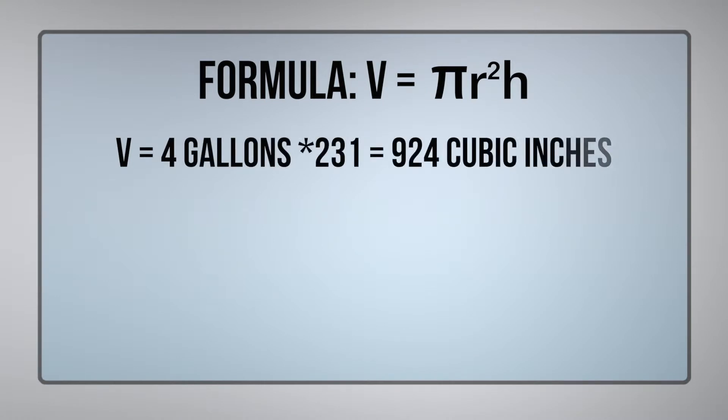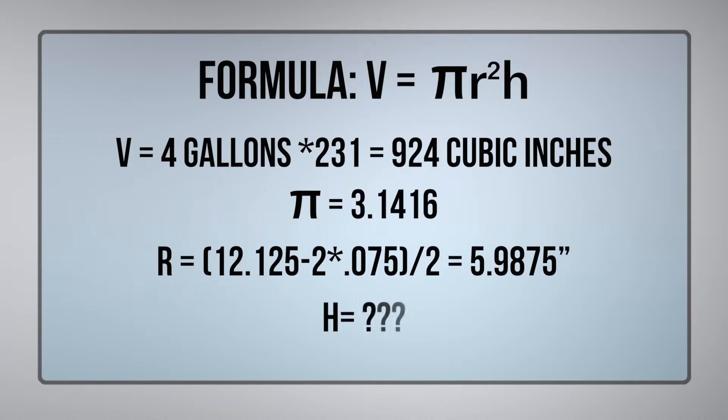So the formula for volume is volume equals pi times radius squared times height. Given that our volume is 4 gallons and there's 1 gallon for every 231 cubic inches, 4 times 231 is 924 cubic inches. Pi is equal to 3.1416. Our radius is equal to our outside diameter, 12 1/8, minus 2 material thicknesses divided by 2, which comes out to 5.9875. And our height is what we're trying to figure out.